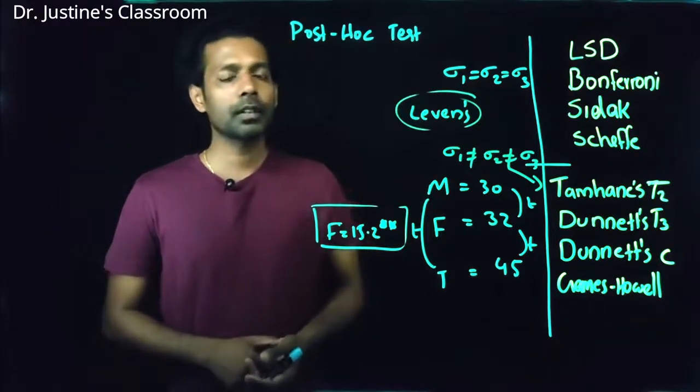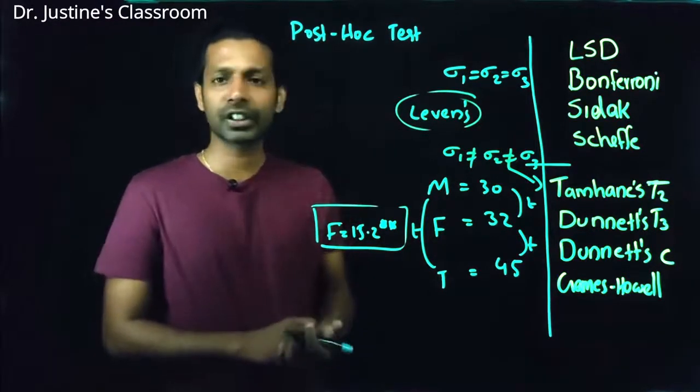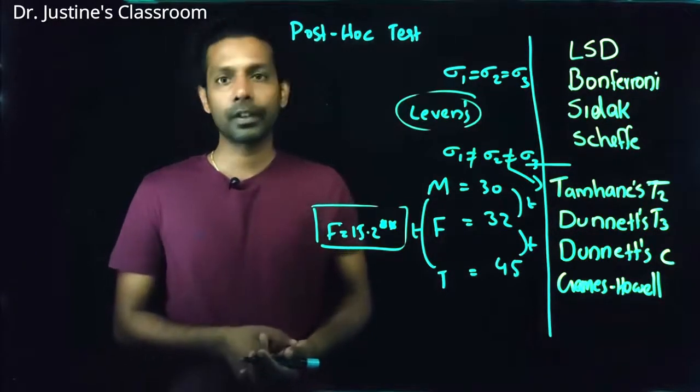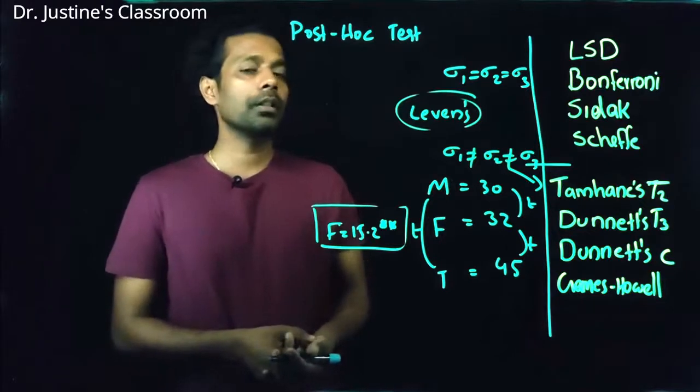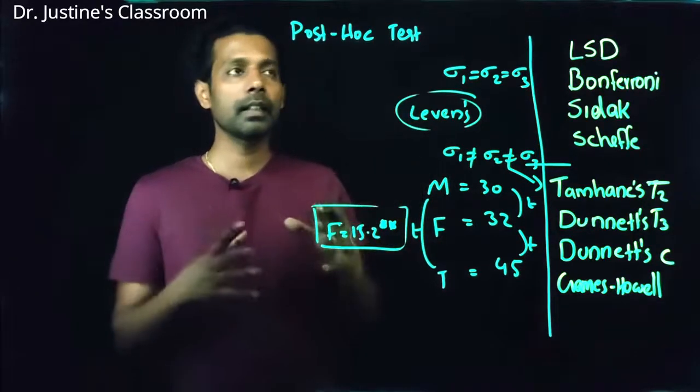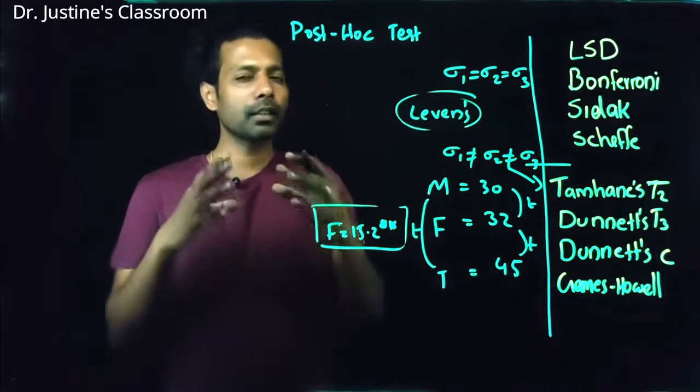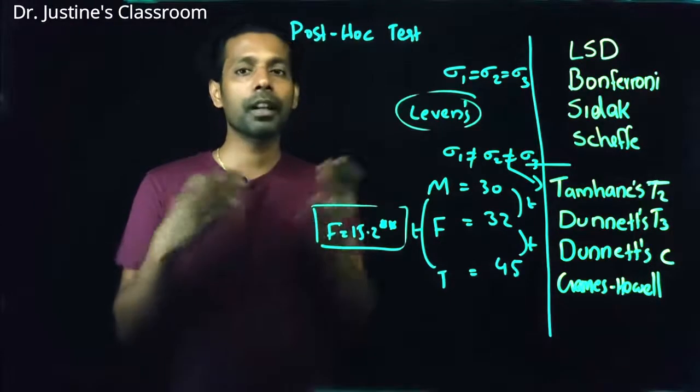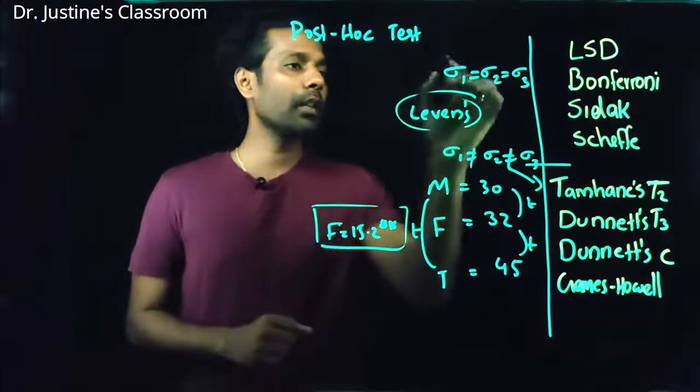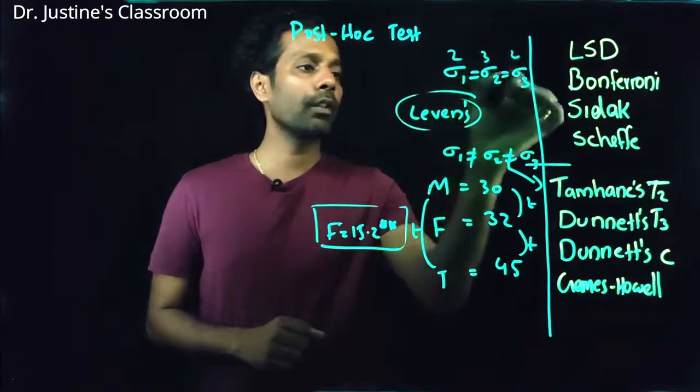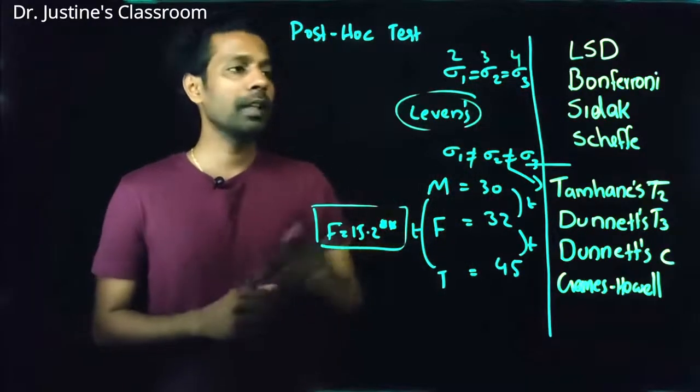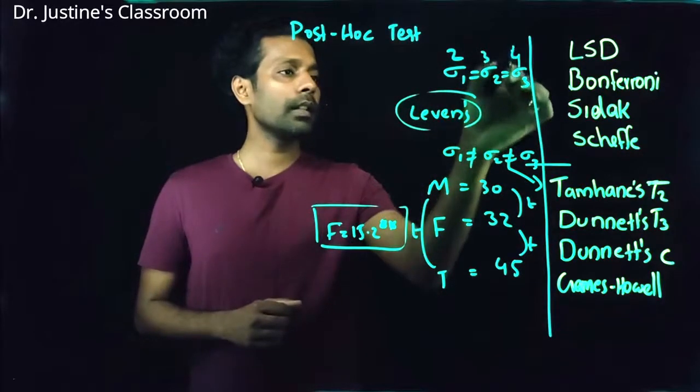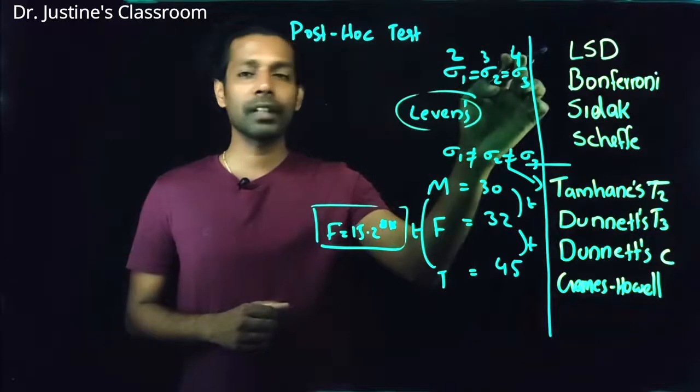Sometimes people say that this Levene's test is a very rigid kind of test. So one easy thing that you can do is find out the variance of the data and see whether the smallest variance is lesser than half of the highest variance. For example, you have a value like 2, 3, 4 - this is the variance of the data. This one is not less than half of the highest variance.